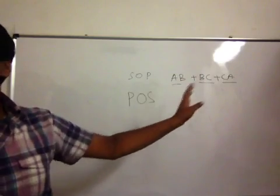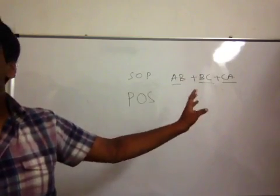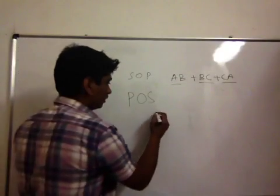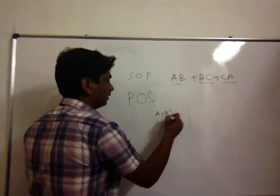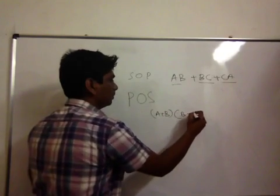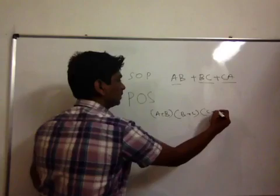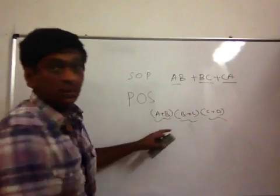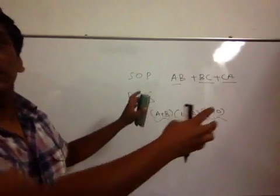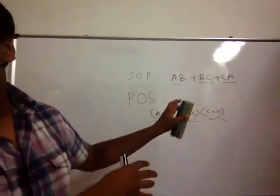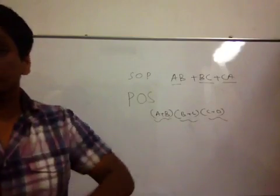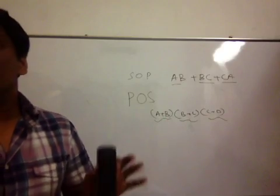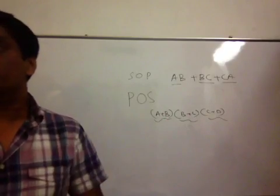Next is POS which is PRODUCT OF SUMS. So, take a few sums, let us consider A plus B into B plus C into C plus D. These are all sums. And you are multiplying all the sums together. So, it is a product of sums. I guess you are now clear with what SOP and POS is. One is SUM OF PRODUCTS and one is PRODUCT OF SUMS.